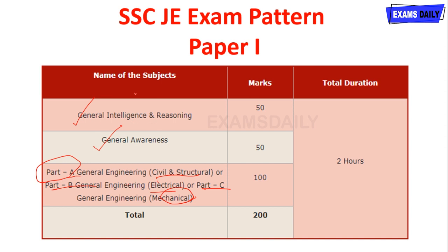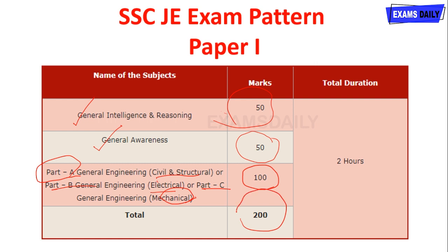For Paper 1: General Intelligence and Reasoning is for 50 marks, General Awareness is for 50 marks, and the subject papers carry 100 marks. So totally, you are going to write this examination for 200 marks, and the time duration for this examination is 2 hours.